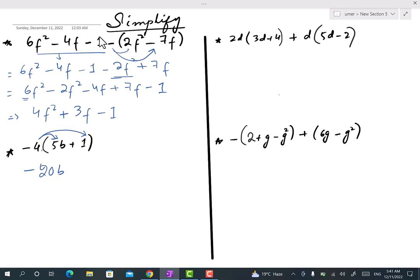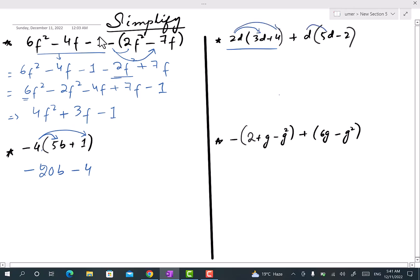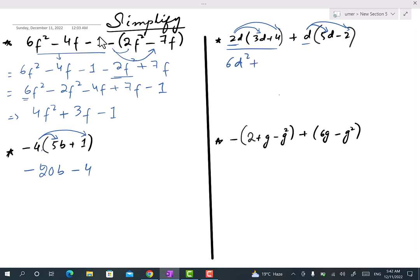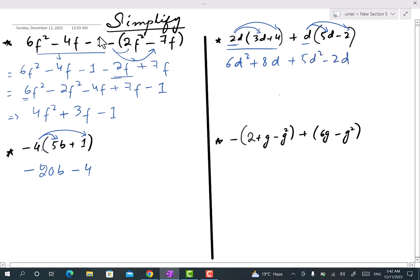Now in the third example, we will apply the same operation over here and then the same multiplication of this bracket with these two terms. Then we'll simplify it by keeping the same variables together. So 2d multiply with 3d, the answer is 6d², and then 2 times 4 is 8d. Now I have plus d which is to multiply with 5d, so answer will be 5d² minus 2d.